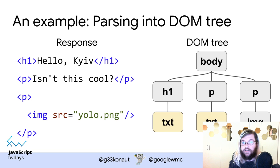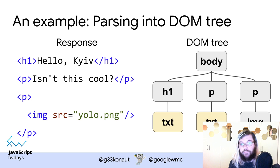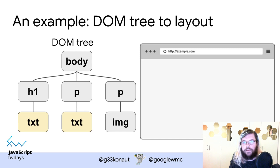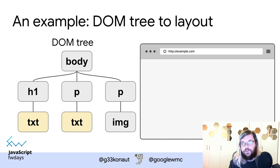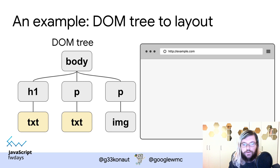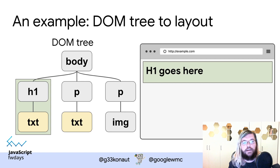We now understand the page's structure: there's a body, a headline, paragraphs, and an image. This is a great advantage of HTML — it can be progressively parsed as data arrives, creating a DOM tree (Document Object Model) representing what is on the page in memory. But when you open a browser you don't see a tree structure — you see the actual content — so clearly something else needs to happen. The next step is layout.